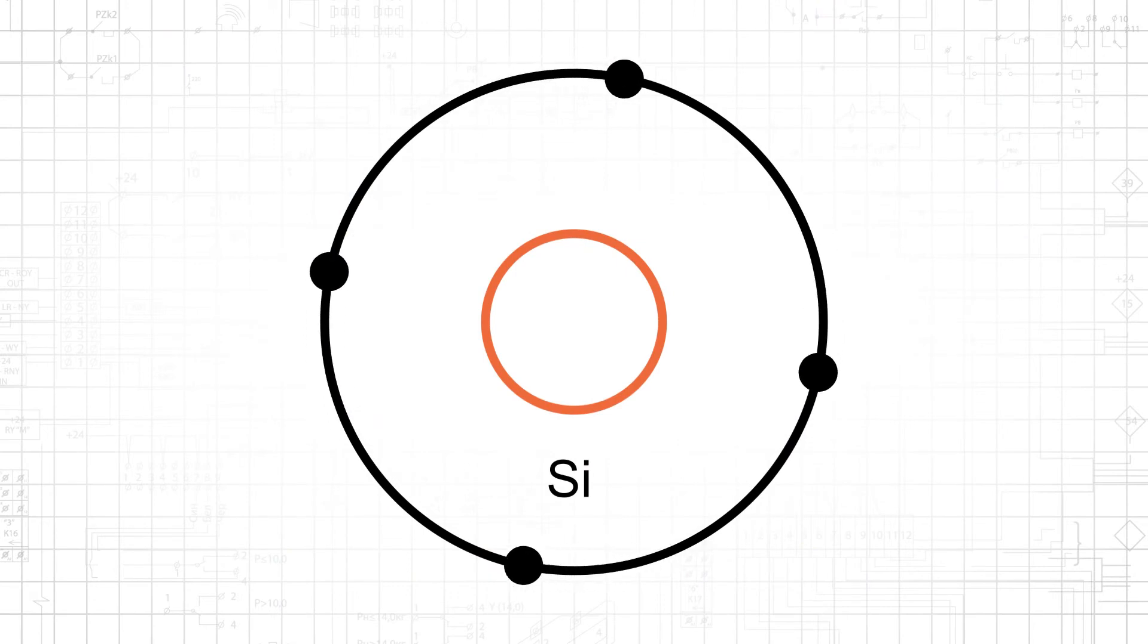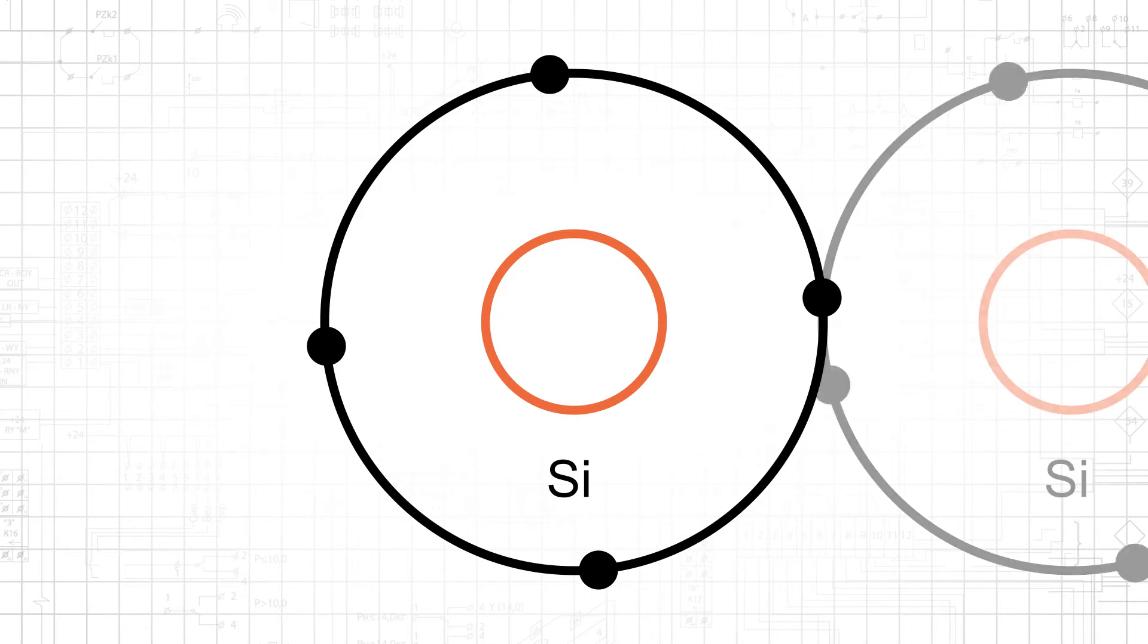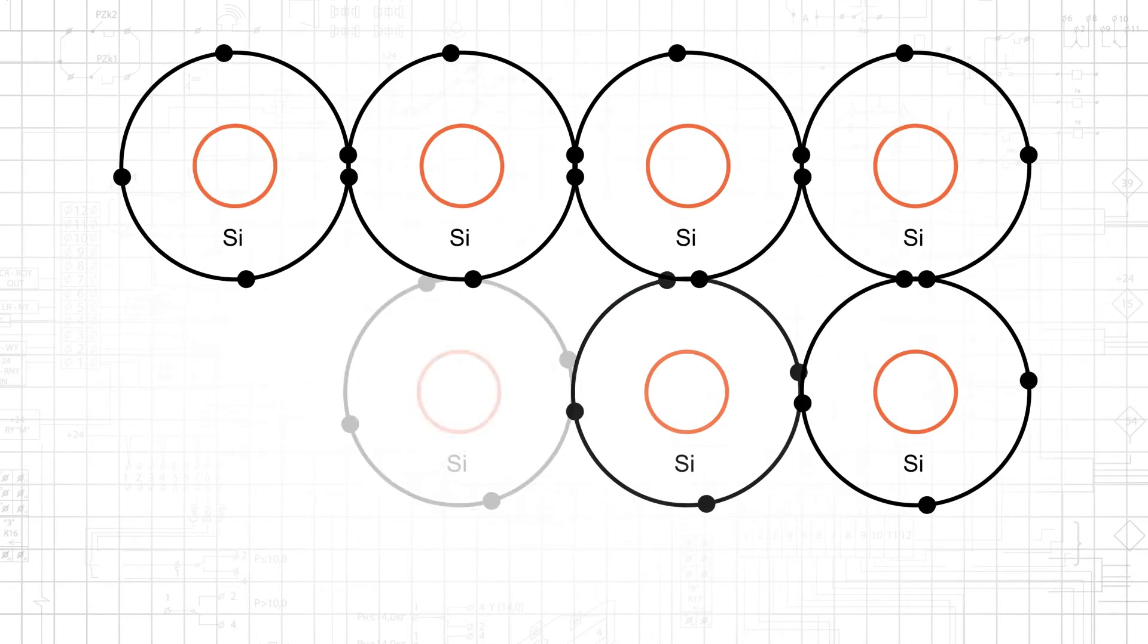Let's say that our semiconductor is silicon, which is a group 4 element and thus has 4 valence electrons. Silicon atoms combine via covalent bonding into a regular lattice structure.